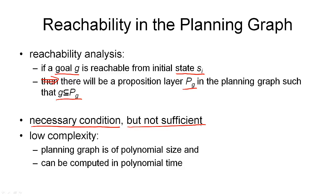Comparing this to the reachability tree seen earlier: the reachability tree was a sufficient condition for testing goal existence, because all nodes contain sets of propositions that necessarily hold in that state, and all propositions were consistent. The planning graph, by contrast, contains propositions in its layers that may hold — whether they do depends on which actions we select. Proposition layers can contain inconsistent propositions that can never be true in the same state (a robot can't be at location one and location two simultaneously), and actions in one layer may never be applicable at the same time.